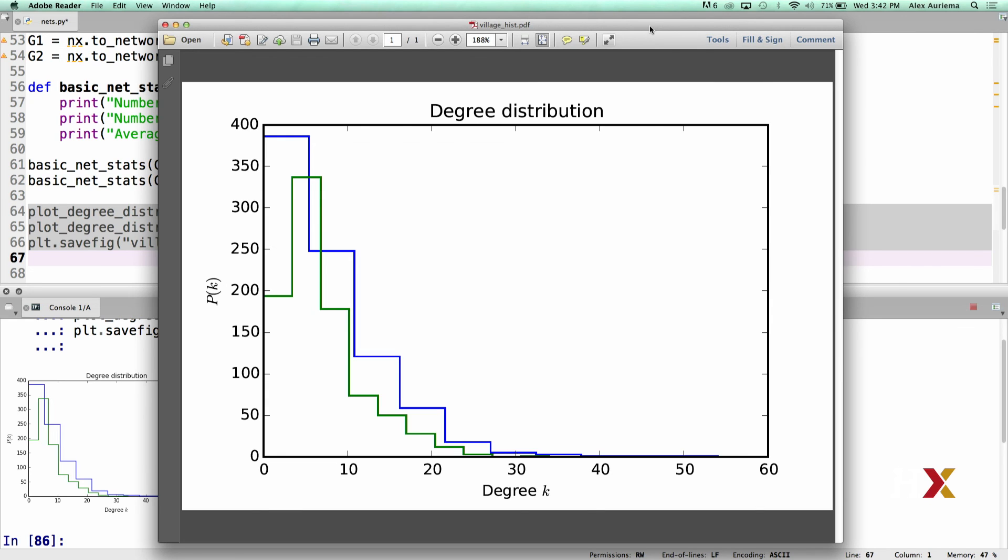Notice how the degree distributions look quite different from what we observed for the ER networks. It seems that most people have relatively few connections, whereas a small fraction of people have a large number of connections. This distribution doesn't look at all symmetric, and its tail extends quite far to the right.